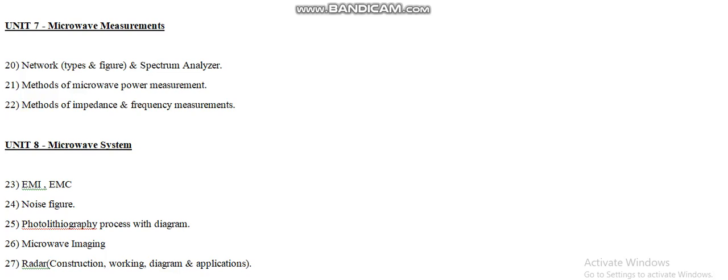Now let us have a look at the last unit, unit number eight, Microwave Systems. According to question number twenty-three, we need to describe EMI and EMC. The examiner can also ask for the differences between EMI and EMC. Study it carefully — this is an important and repeated question.